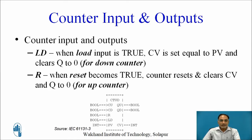The next input is LD, which stands for load. When the load input is true, the CV value is set equal to PV and Q is cleared to 0. The load signal is associated with the down counter. Similarly, R is another input standing for reset. When reset becomes true, the counter resets and clears both CV and Q values to 0. The reset signal is associated with the up counter.